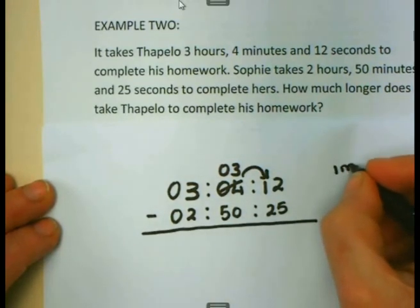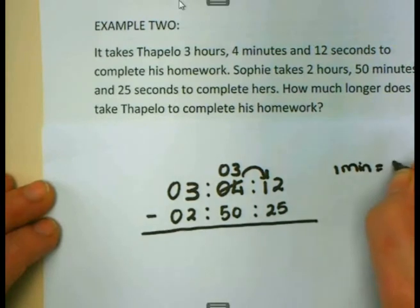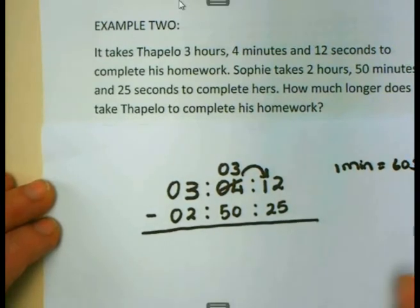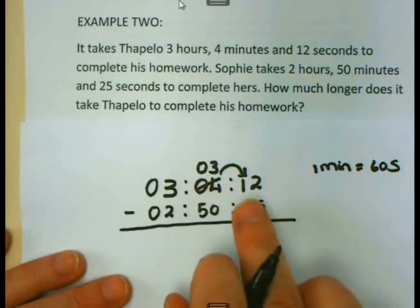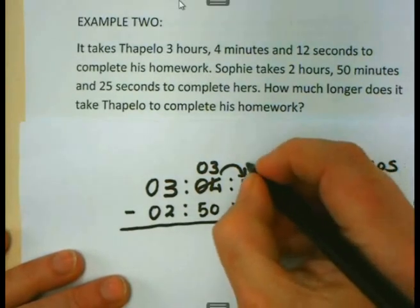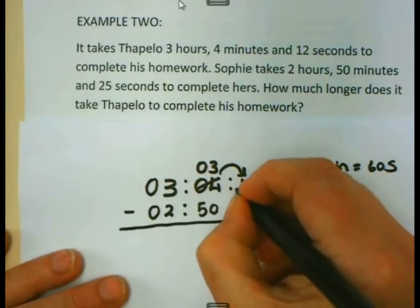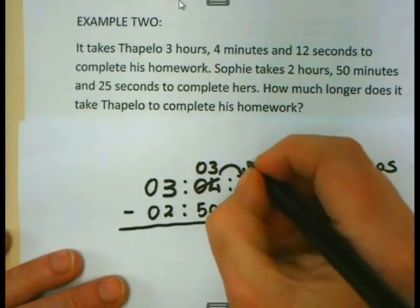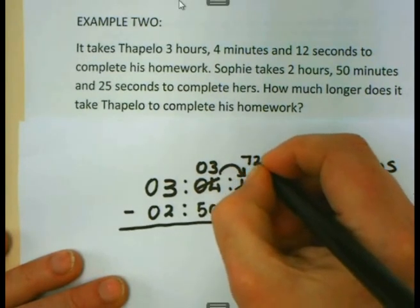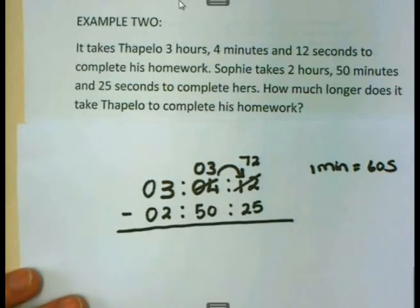And I take over to my seconds 1 whole minute. But remember, 1 minute is 60 seconds. So what I am bringing over is not just 1, I am bringing over 60. And now if I take the 60 and I add the 12 that I am having, my total amount of seconds is 72 seconds.